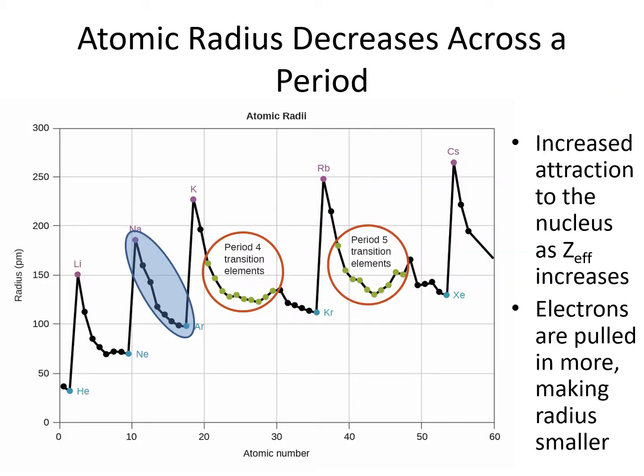This overall trend is really a combination of two trends: what happens as you go across a period and what happens as you go down a column of the periodic table. As you go across the periodic table, the effective nuclear charge increases, meaning an electron on the outside feels more positive charge. Remember, opposites attract, so the electrons on the outside are pulled inward and the atom contracts. You can see in this chart that for each period, for example from sodium through argon, the radius generally decreases as atomic number increases.